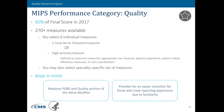So what makes up your final score? The first category is quality. We have finalized over 270 to 280 measures that are available. The requirements are that you would need to select six measures. One of those would need to be an outcome measure. If an outcome measure isn't available, you would need to select another high-priority measure, such as appropriate use, patient experience, patient safety, efficiency, or care coordination. You can make the selection either through a comprehensive set of close to 300 measures, or you could make this selection from a specialty set.